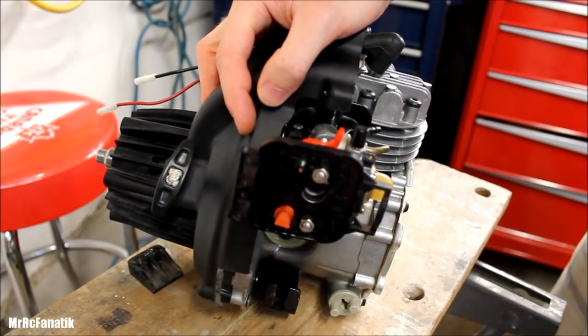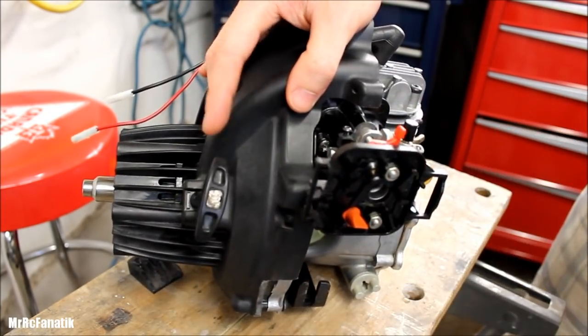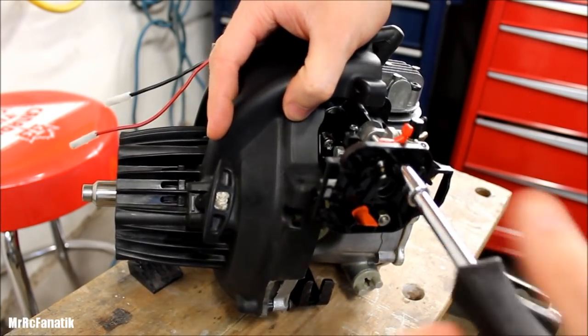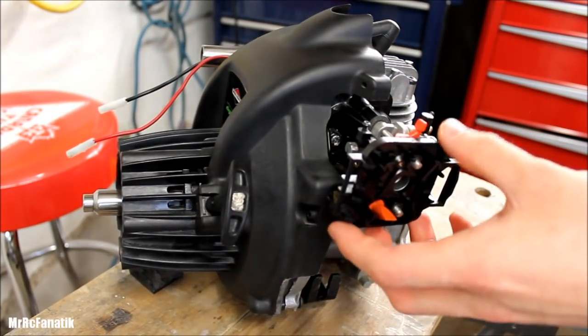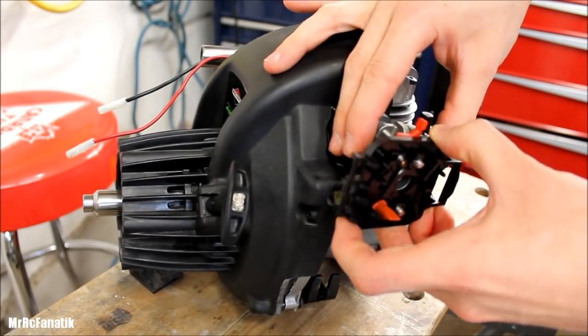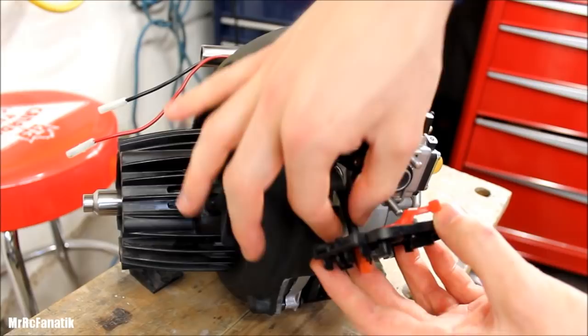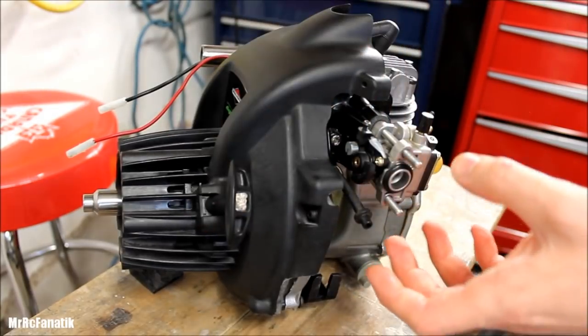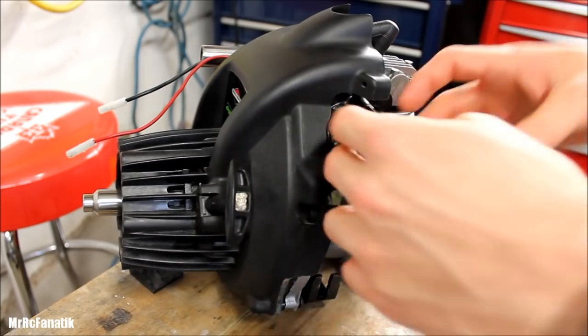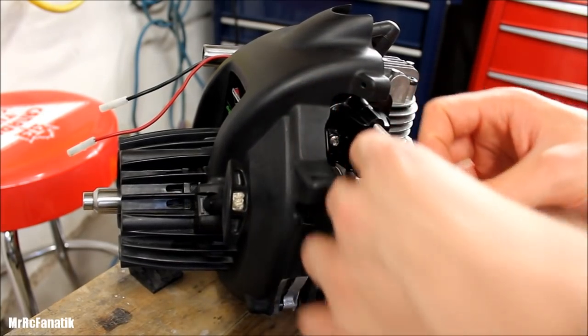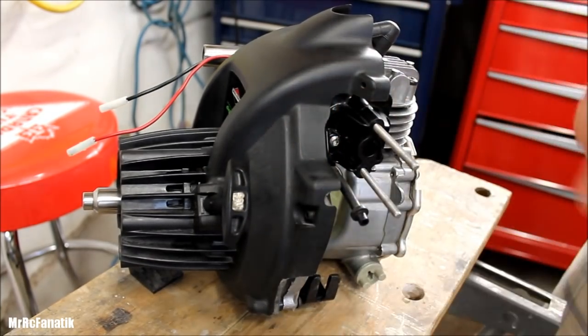Now to remove the filter, pull that cap off, push this in, and remove the actual filter. Then we'll grab our 8 millimeter socket and undo these two nuts. This part just simply slides off. We'll pull this little hose up, the carb then also just slides right off, and we'll take this gasket as well. You're not to lose this.